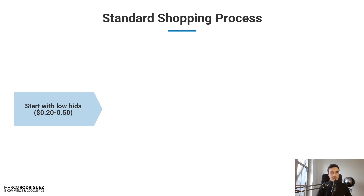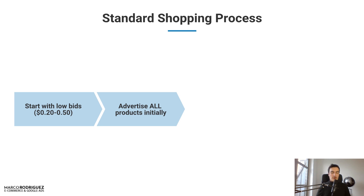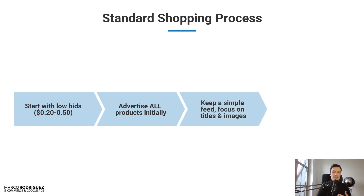The standard shopping process looks like this: start with extremely low bids — 20 cents, 30 cents, up to 50 cents depending on your niche. In some niches you can start at 5 to 10 cents. You should advertise all your products initially. I see a lot of people trying to artificially narrow down to three or five products — don't do that. You don't know which will produce the best results. The big advantage of shopping is you can push all your products into Merchant Center, all into one campaign, and get started without creating individual ads for each.